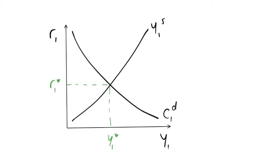In the previous video we derived our equilibrium in the goods market, which I have quickly drawn up and is on the screen now. In this video we're going to look at what happens when we have some shocks to productivity, both permanent and temporary.